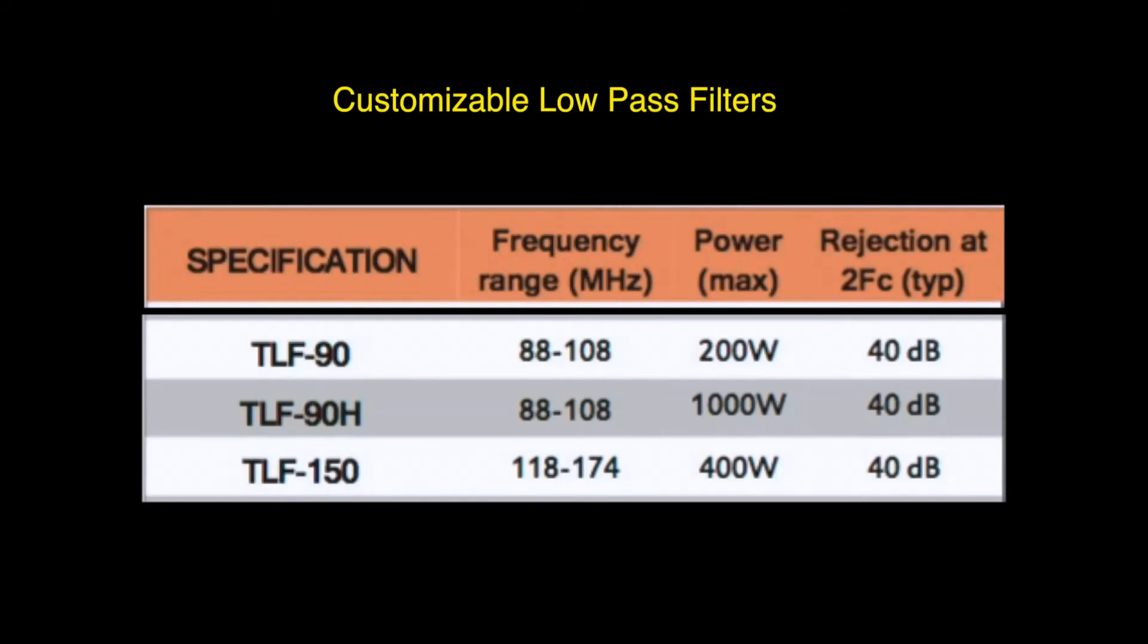These particular units can be adjusted somewhat. So contact the factory and give them the specs on pass and reject frequencies that you need.